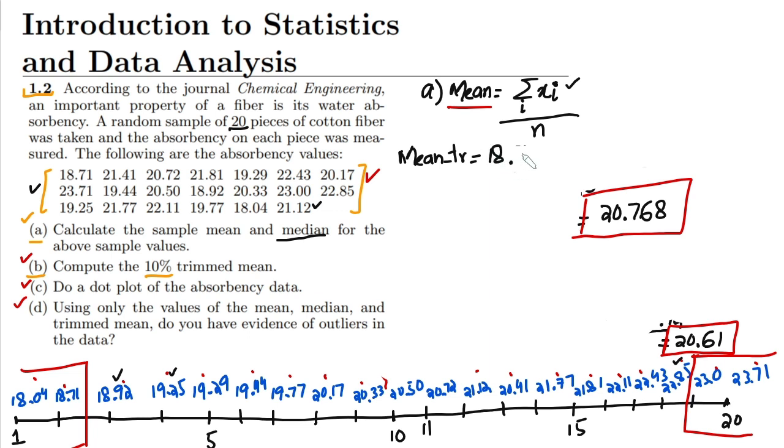Plus 19.29 up to the last data point, which is 22.85. After adding them, I have to divide by what? Two data points from the lower end and two data points from the upper end have been removed.